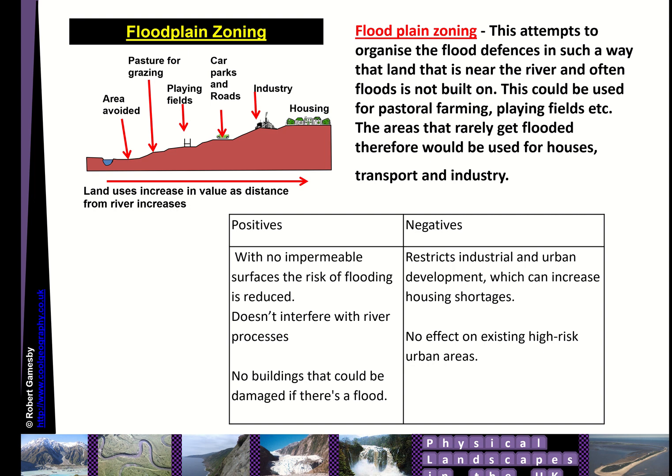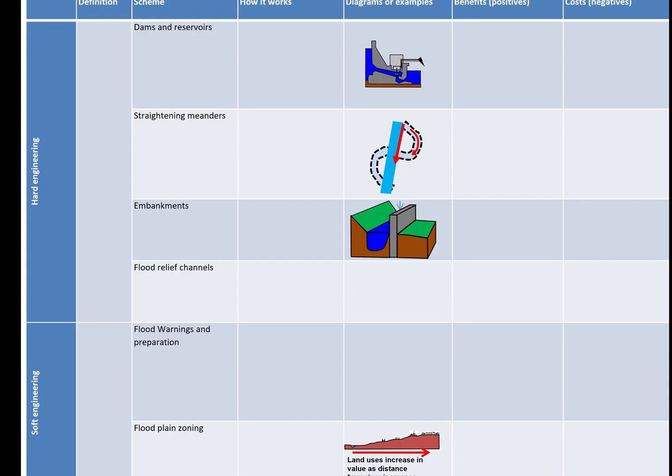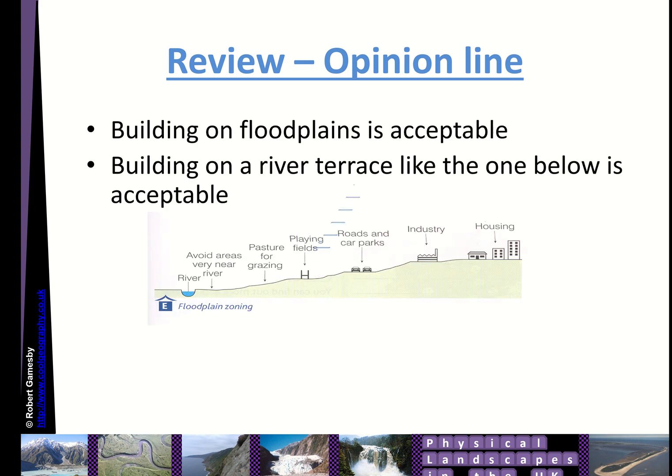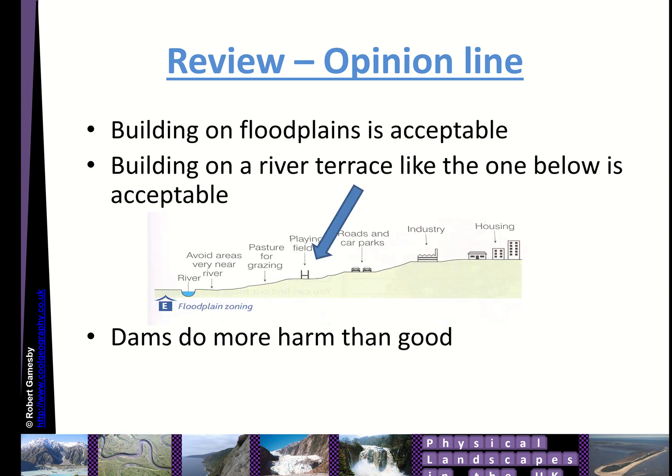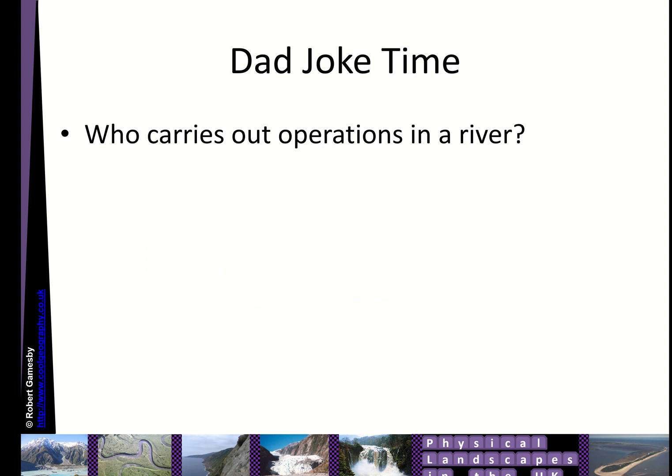There are other soft engineering methods, such as river restoration — putting meanders, wetlands, and marshlands back into river areas so they absorb water. The UK government is also exploring the use of natural dams on small tributaries to hold back water in upper catchments and protect downstream areas. Your task is to finish the table, adding how each strategy works, a couple of diagrams, and the benefits and costs. There's also an opinion line — for example, do you agree that building on flood plains is acceptable, or that dams do more harm than good?